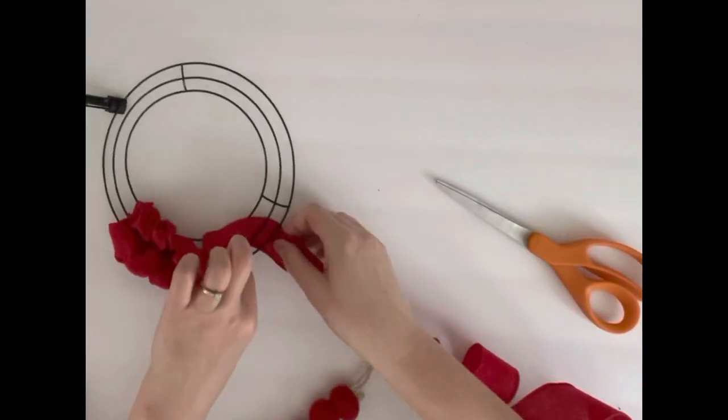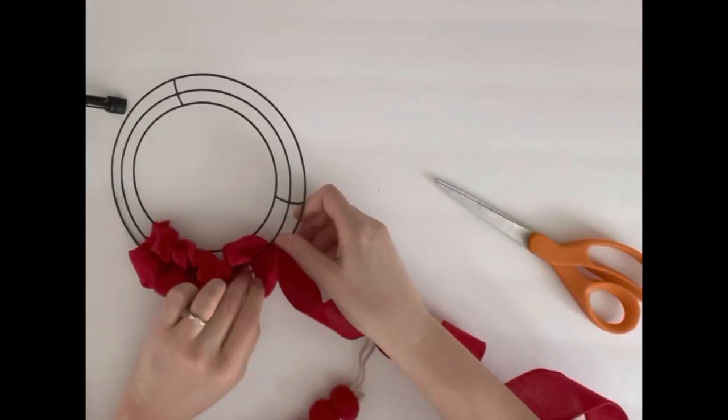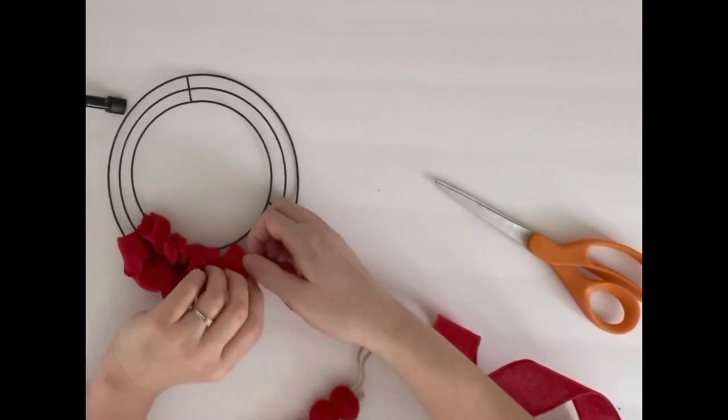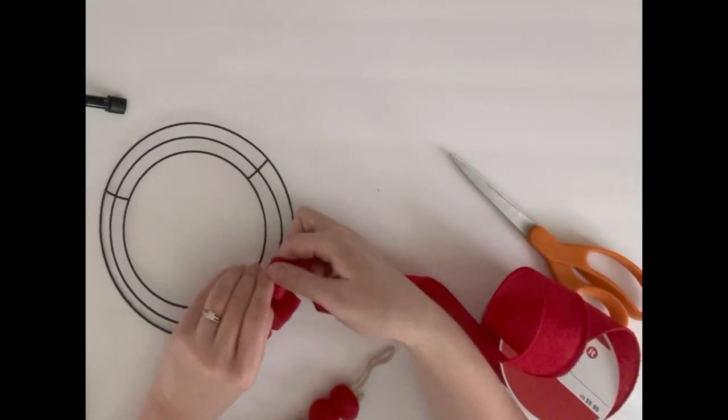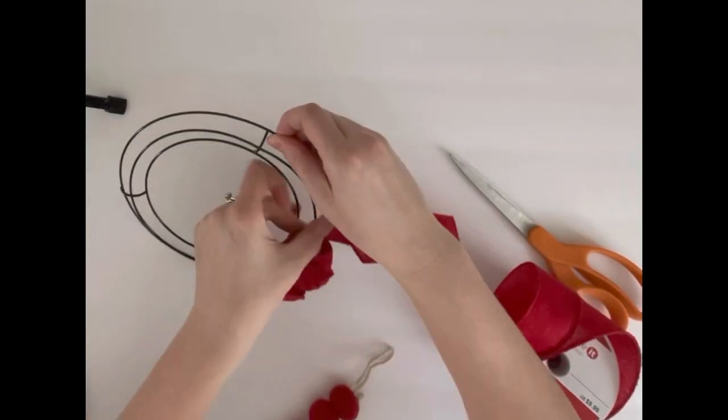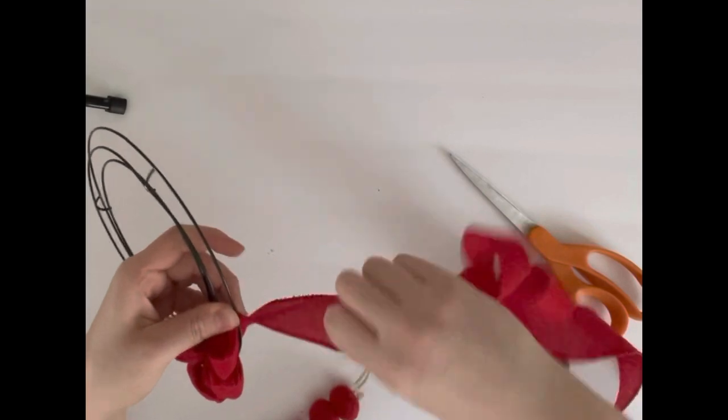Before coming up again to poke the ribbon through the wreath form, you're just repeating that over and over until the wreath is covered. This small 8 inch wreath did use about 25 feet of ribbon.